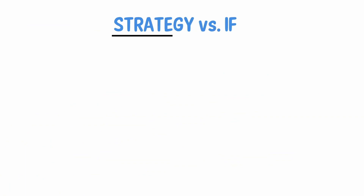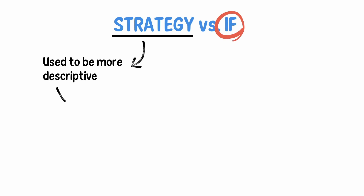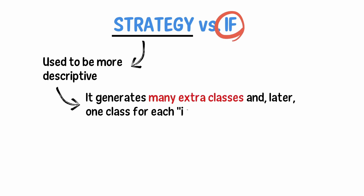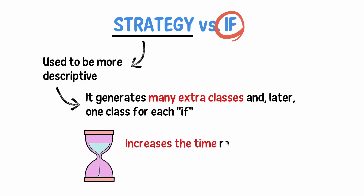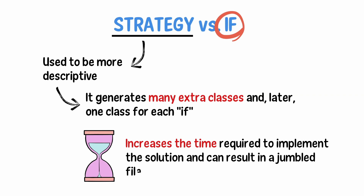Strategy versus If: Strategy is used to be more descriptive and to avoid using if statements in main logic. However, it generates many extra classes — one class for each if. This aids testing but increases the time required to implement the solution, and can result in a jumbled file structure if we do not have a consistent namespace standard.